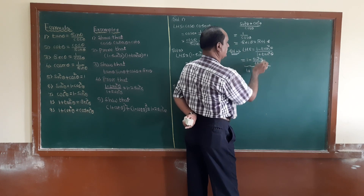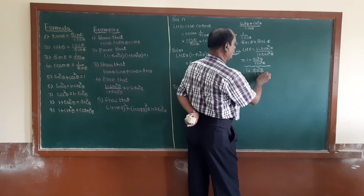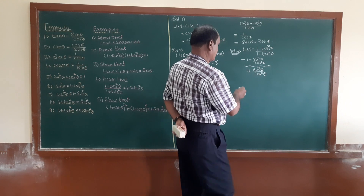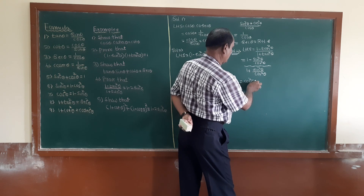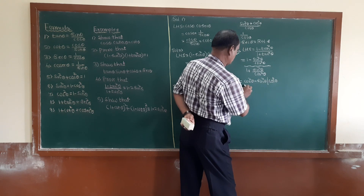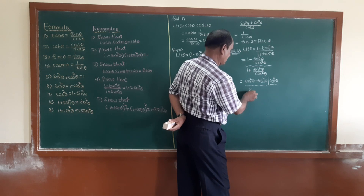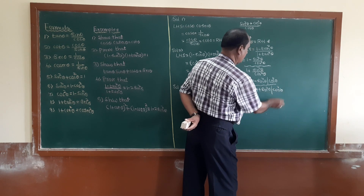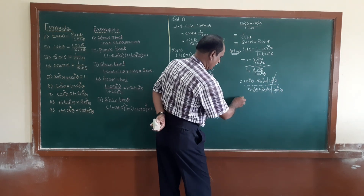For the denominator, 1 plus tan squared theta equals 1 plus sine squared theta over cos squared theta. Taking the LCM as cos squared theta, the numerator becomes cos squared theta minus sine squared theta, and the denominator becomes cos squared theta plus sine squared theta, all divided by cos squared theta. The LCM cos squared theta cancels.